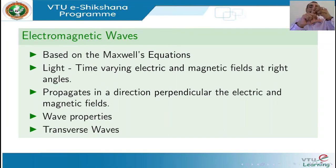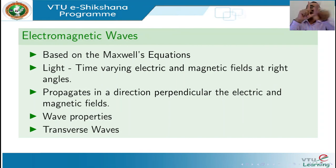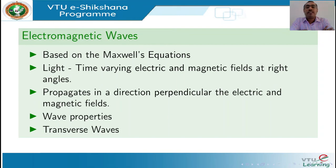For example, if the electric field is along the y-axis, then the magnetic field will be along the z-axis and the direction of propagation is along the x-axis. Based on this electromagnetic theory, Maxwell was able to explain the wave properties of light like interference, diffraction, and polarization. And from polarization, it is evident that light waves are transverse in nature.